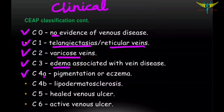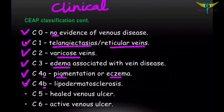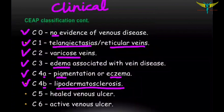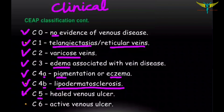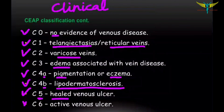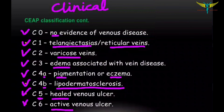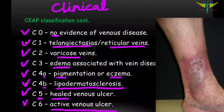C4A — there is pigmentation or eczema of the skin. C4B — you can see lipodermatosclerosis. C5 — a healed venous ulcer is present. C6 — an active venous ulcer is present.